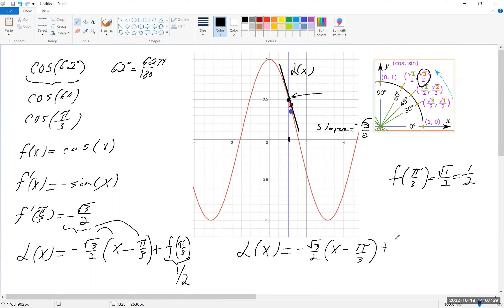And let's see, once we compute this, if that's going to work for us. So now, I don't know if I'll have enough space, but what I'm going to do is I'm going to plug in the 62 pi over 180. So it's minus root 3 over 2 times 62 pi over 180.